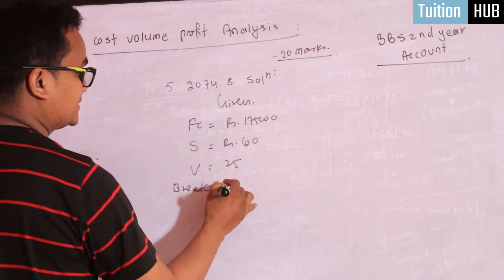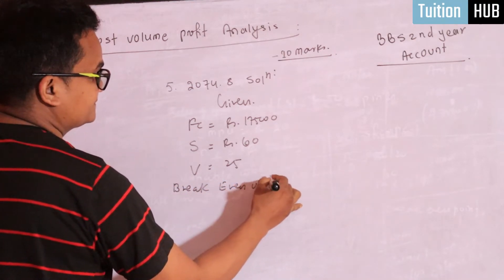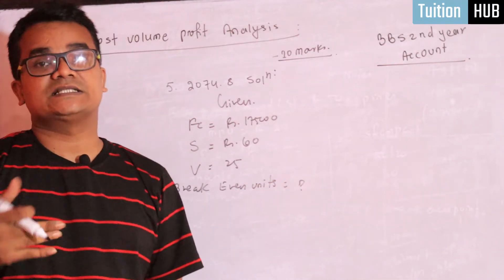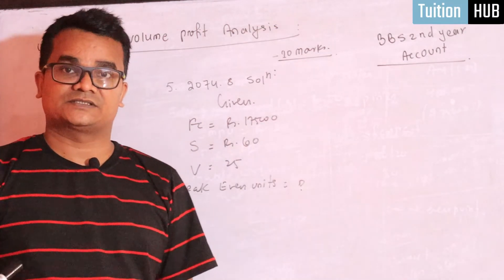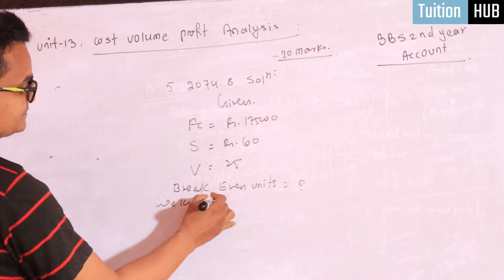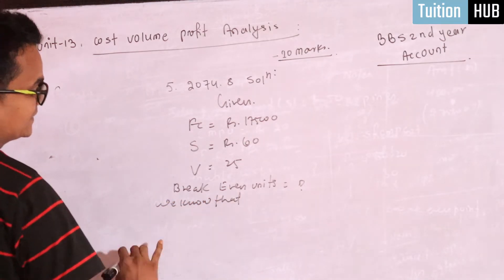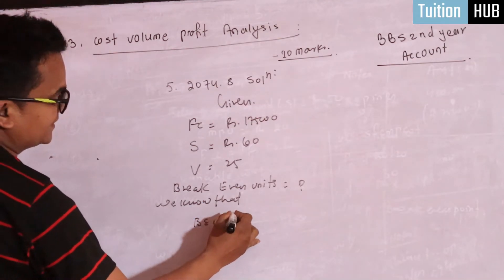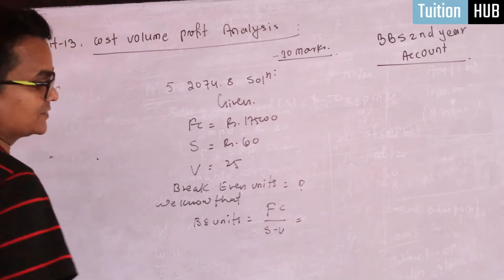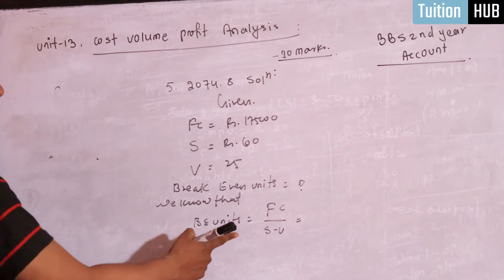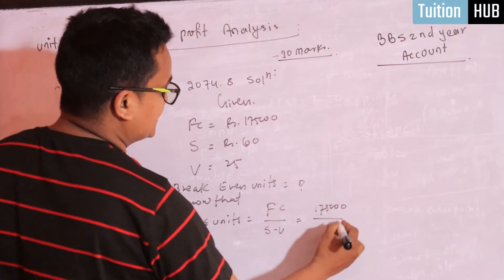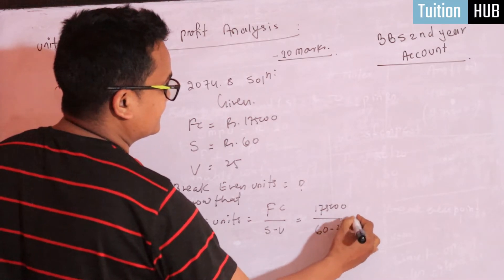Break-even units — break-even point, sales unit. We know that: FC means 1,75,000; FC divided by selling price means 60; variable means 25.